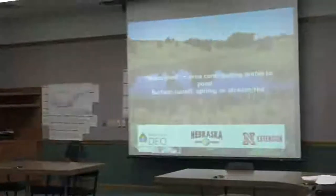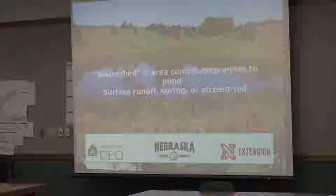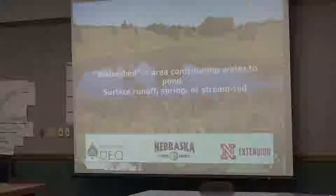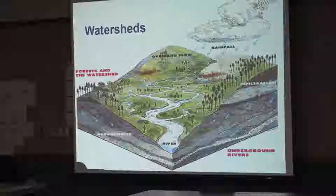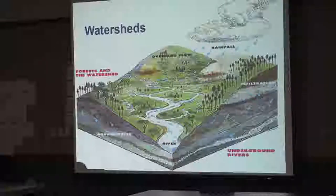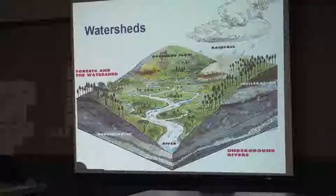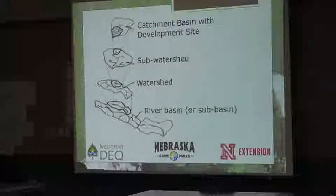The first concept, and the main one, is watershed. It's the basic concept of everything we're dealing with — an area contributing water to a pond, through surface runoff, spring, or stream fed. It could be a river, a stream, and so on. The idea being: rainfall falls on an area — where does that rain go? That's a watershed. You can define it further with rainfall in a specific basin, a specific site that falls into a sub-watershed, which drains into a bigger watershed, which then drains into a river basin.